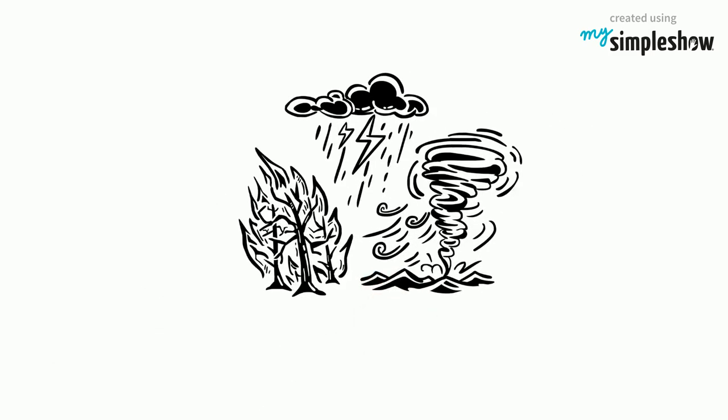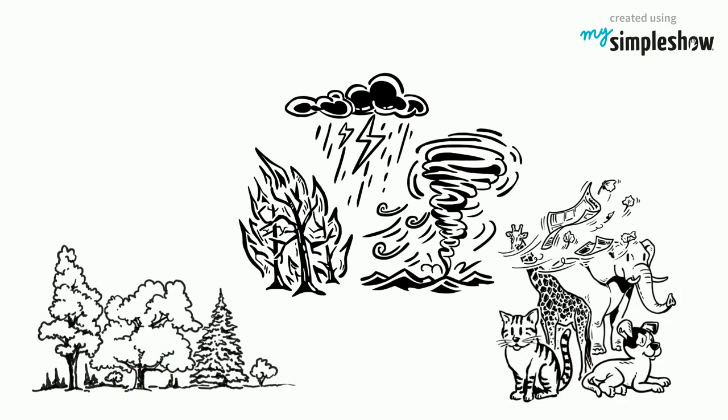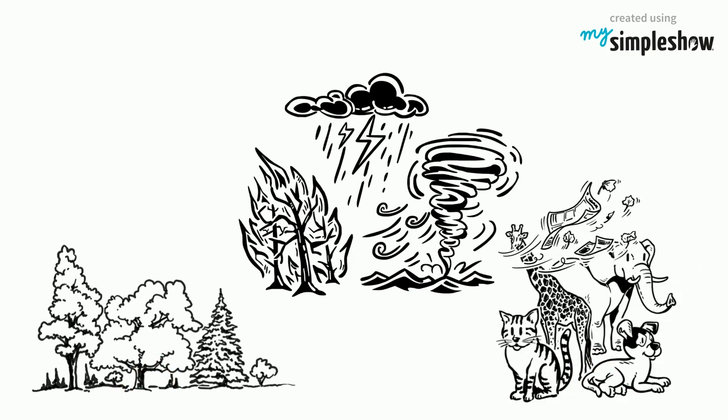Natural disasters are also influenced by global warming and affect plants and animals. Strong hurricanes can blow away animals and level entire ecosystems, while wildfires can completely destroy them.